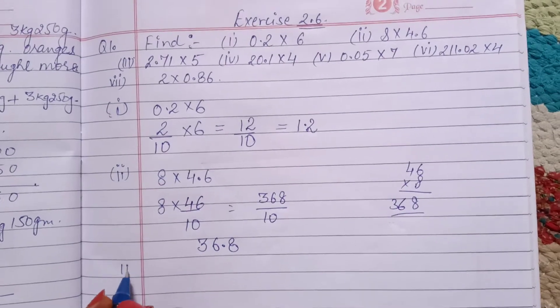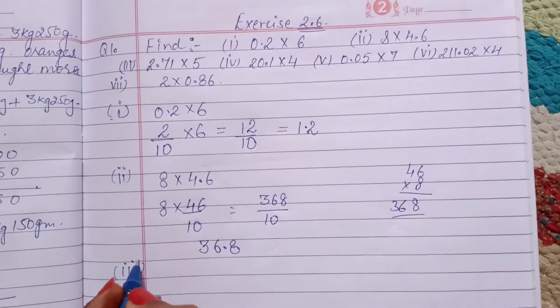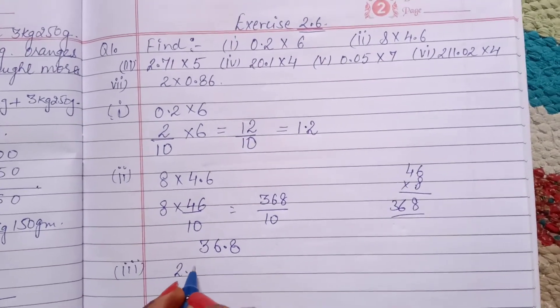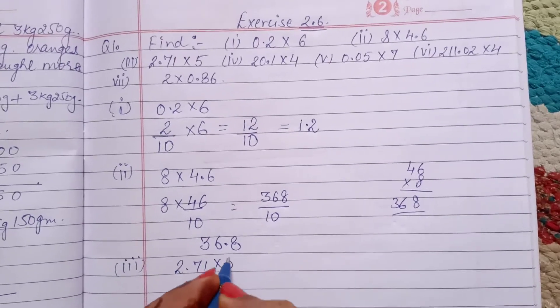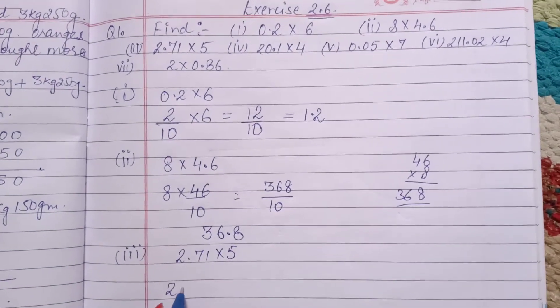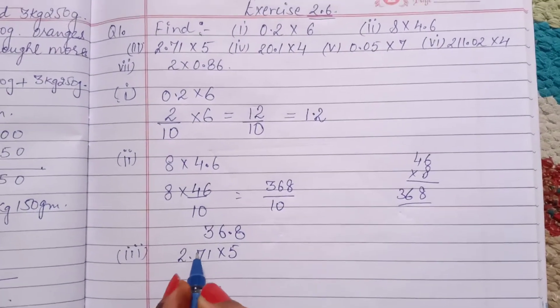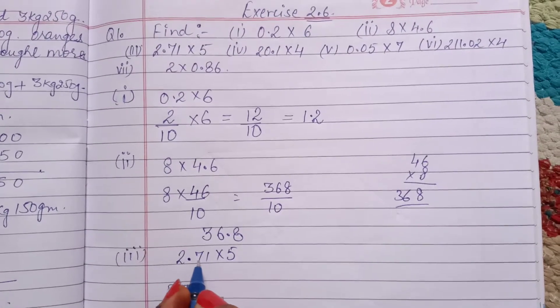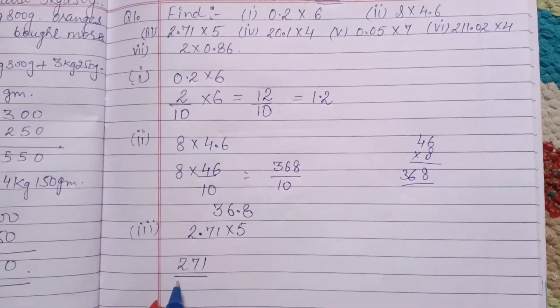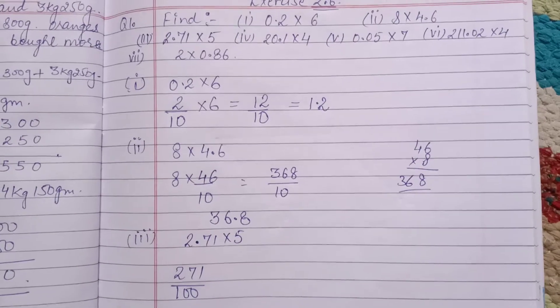Third part, 2.71 into 5. Remove decimal. Here after decimal, after 2 digits, then we put 100.